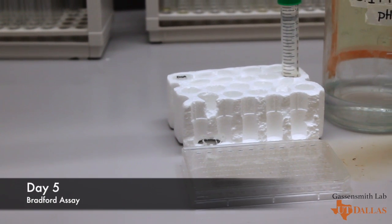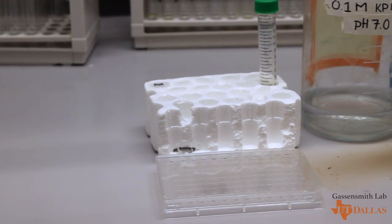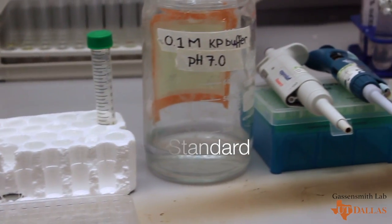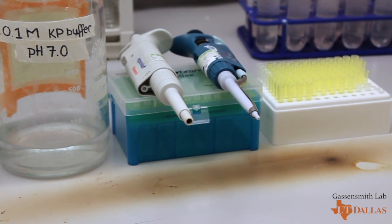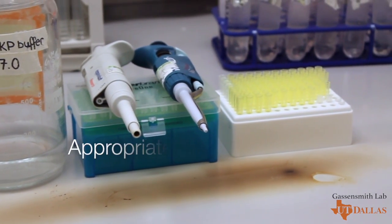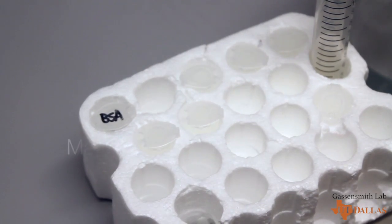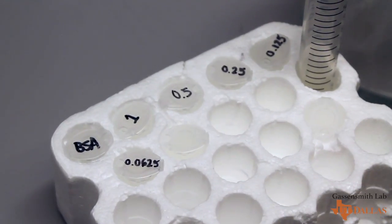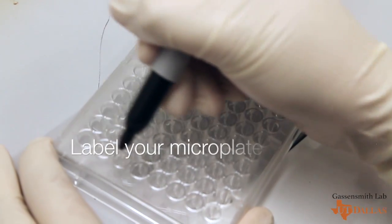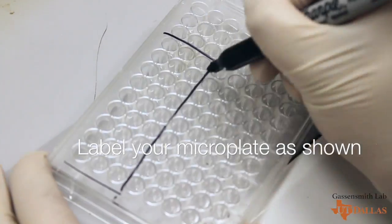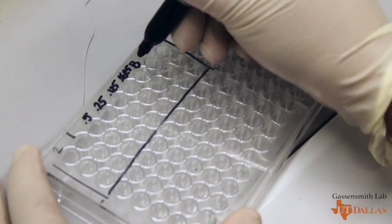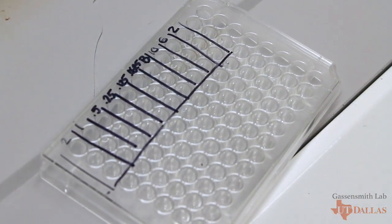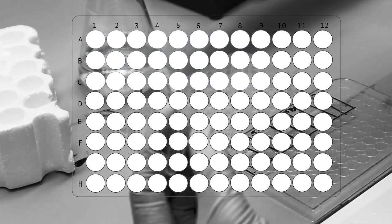We will be running a Bradford assay to find out the concentration of our Q-beta. For this step, you will need a microplate, 2 molar BSA standard, KP buffer, your purified Q-beta, Eppendorf tubes, and necessary micropipettes and tips. Start out with a 2 molar BSA standard. You will do a serial dilution with KP buffer to achieve 1 molar, 0.5 molar, 0.25 molar, 0.125 molar, and 0.0625 molar standards of BSA. Make sure to do the following steps in triplicate.